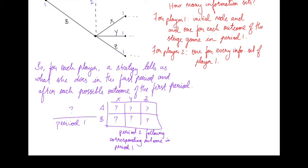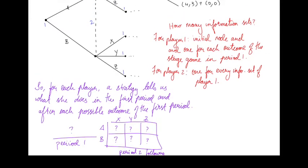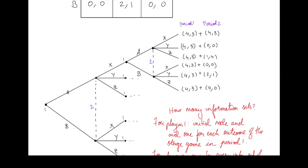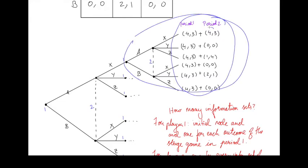If we want to figure out what the subgame perfect equilibria are, we're going to do that by backwards induction. We'll start with the smallest subgames — the period 2 stage games — figure out what the players need to do there, and work our way backwards. What we see is that the payoffs in this subgame are the payoffs from the stage game plus a constant for each player. For each possible outcome, we're adding 4 for player 1 and 3 for player 2.